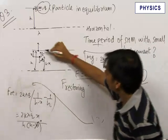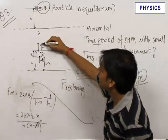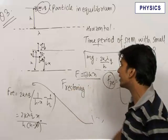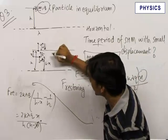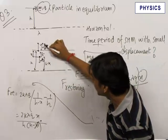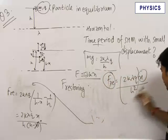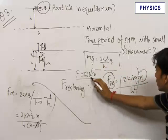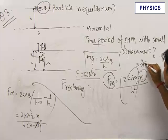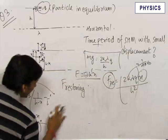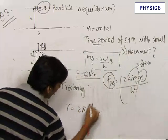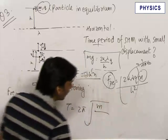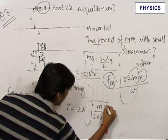You should also verify this for displacement above the equilibrium position — in that case too, the restoring force will be in the downward direction, of magnitude kx. The time period of SHM is 2 pi times the square root of mass upon the spring constant, which here is 2k lambda q upon h squared. Note that k here is 1 upon 4 pi epsilon naught, not the spring constant.